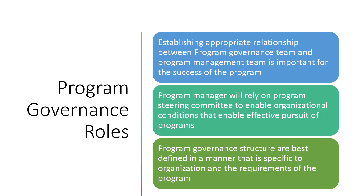We need to understand why we need different roles within program governance and what the significance of these roles is. Establishing an appropriate relationship between the program governance team and the program management team is very important for the success of the program. The program manager will be relying on the program steering committee to enable organizational conditions that support effective pursuit of the program.